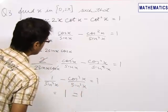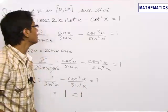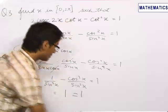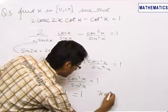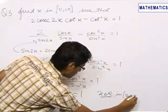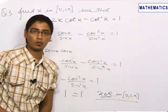So, basically this becomes an identity and identity is satisfied by infinite values of x. So, this is satisfied by all x belonging to the range 0 to 2π. The answer is, it is satisfied by all values of x in the range 0 to 2π.